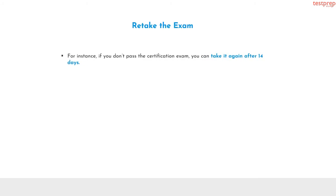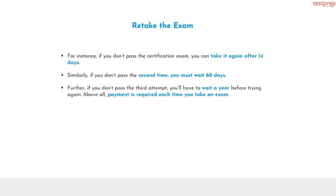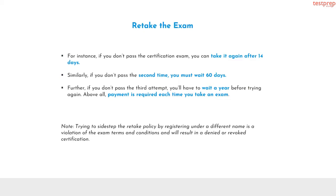Regarding retaking the exam: if you don't pass, you can take it again after 14 days. If you don't pass the second time, you must wait 60 days. If you don't pass the third attempt, you'll have to wait a year before trying again. Payment is required each time you take an exam. Note: trying to sidestep the retake policy by registering under a different name is a violation of the exam terms and conditions and will result in a denied or revoked certification.